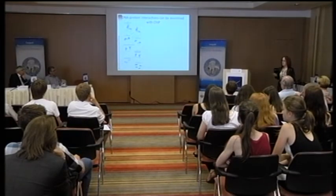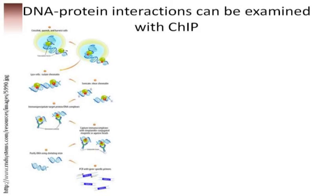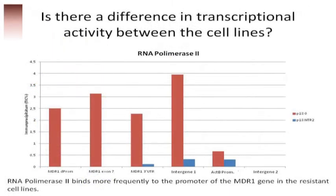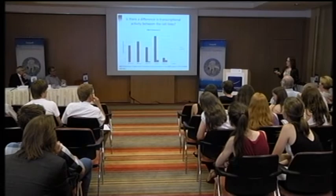Since the DNA itself did not change, it is possible that DNA-binding proteins cause the difference. We used chromatin immunoprecipitation, a method to specifically find proteins bound to a given section of a gene. We examined the promoter region, the exon, and the end of the MDR1 gene, as well as several outer reference genes. We found that RNA polymerase 2, mainly responsible for mRNA transcription, binds more frequently to different regions of the MDR1 gene in resistant cell lines than in sensitive ones, proving that these cells are more transcriptionally active at this gene.